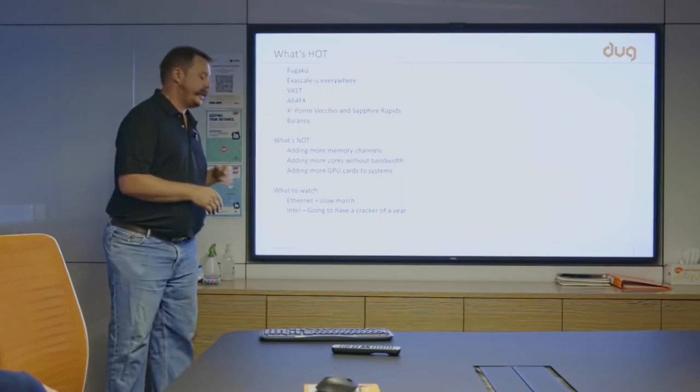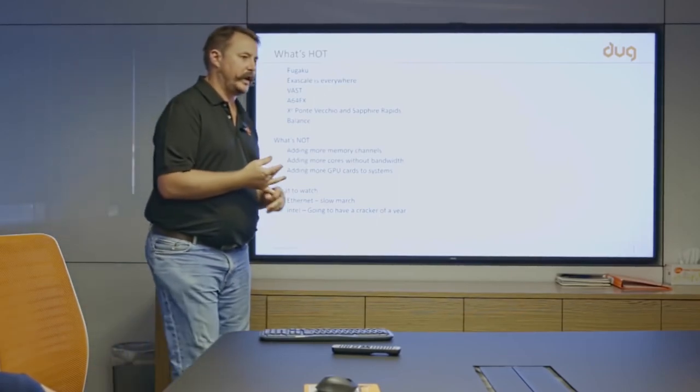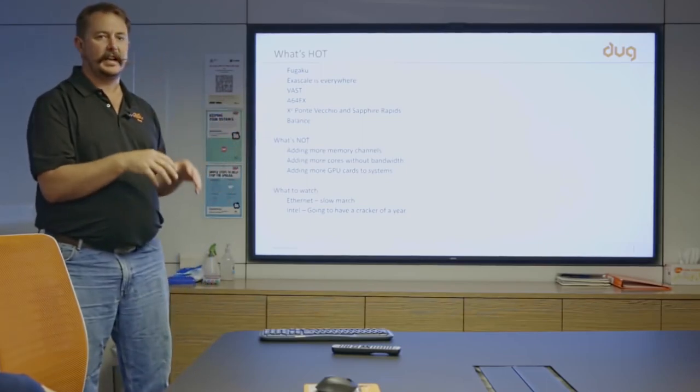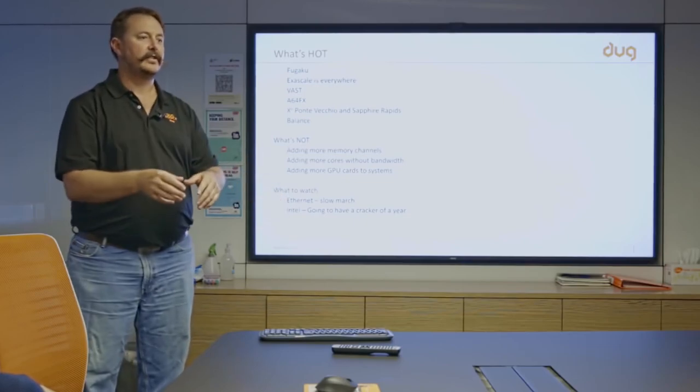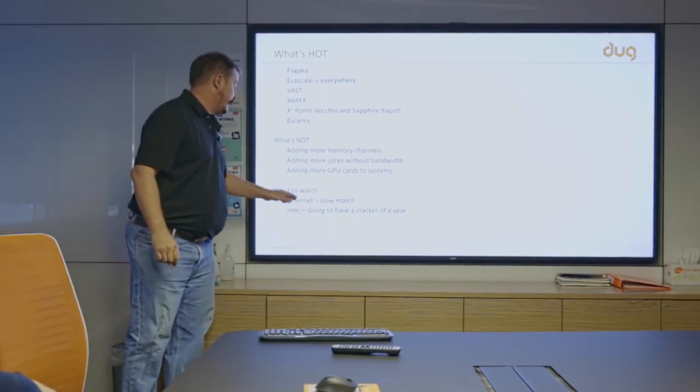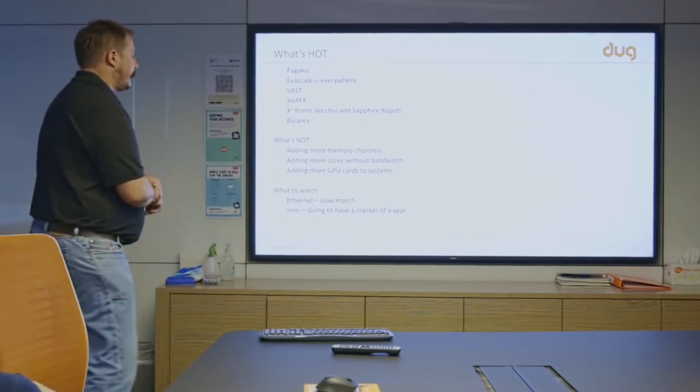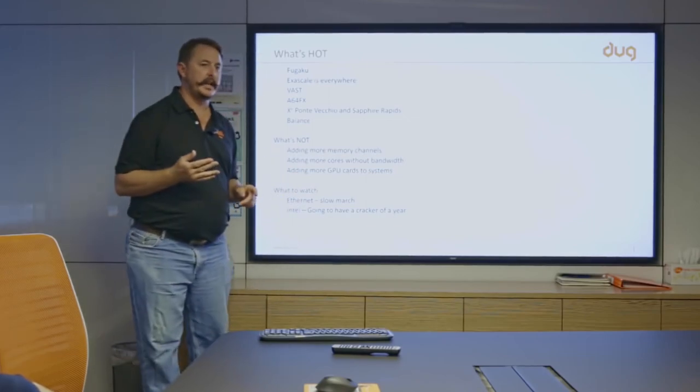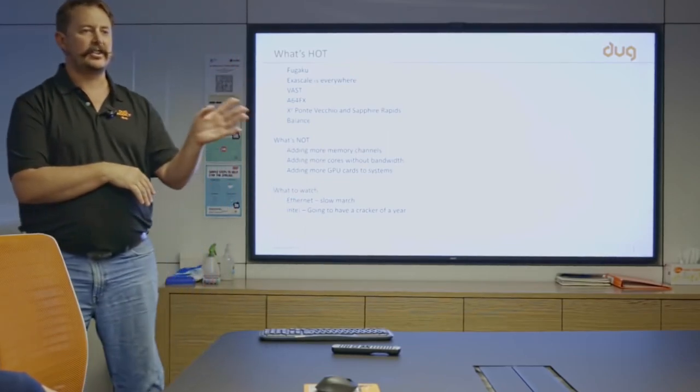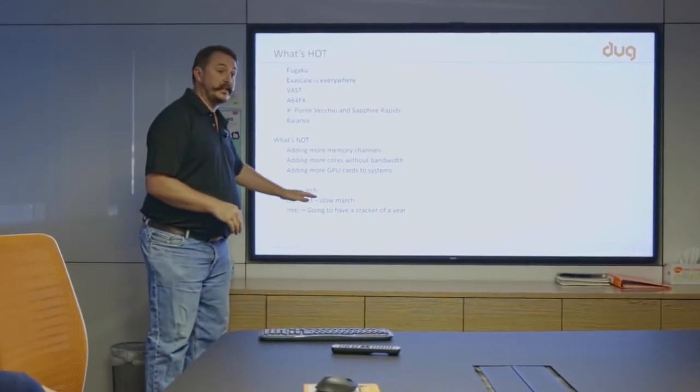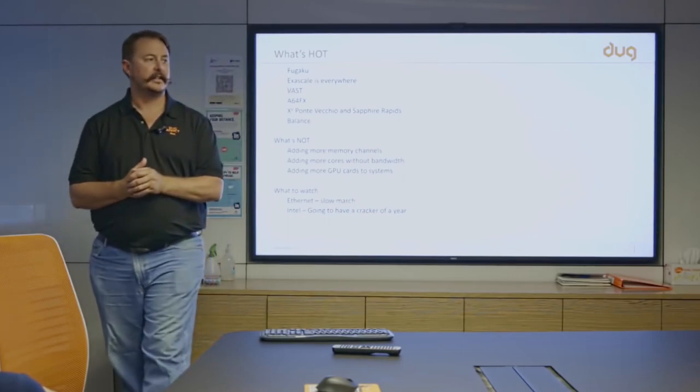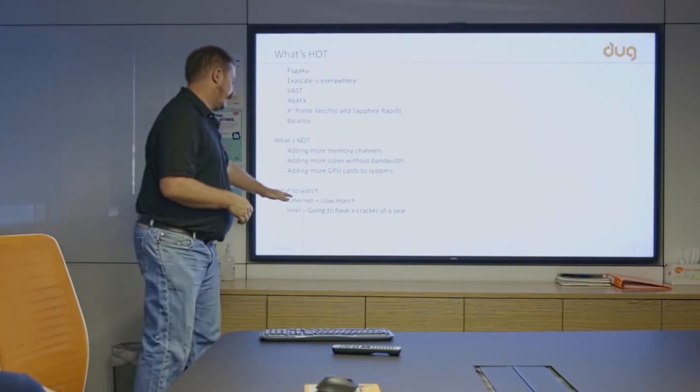What to watch? Ethernet. Fugaku has Tofu-D, we've got InfiniBand, but Ethernet just slowly marches on, slowly takes over everything. Inside Doug, we're building networks in Ethernet which before you had to go to exotic networks to do. You can now get the super low latencies in Ethernet that you could only get in exotic networks. I think Intel is going to have a cracker. Not this year maybe, but towards the end of this year when Ponte Vecchio comes out, Sapphire Rapids comes out, I think they're going to step over everyone in performance again. Late this year, early next year, into next year, they'll get their Exascale system out based on Sapphire Rapids and Ponte Vecchio. They'll start becoming available to all of us, and I think they're going to reclaim the crown probably mid to late next year. I think they're going to have a great year.